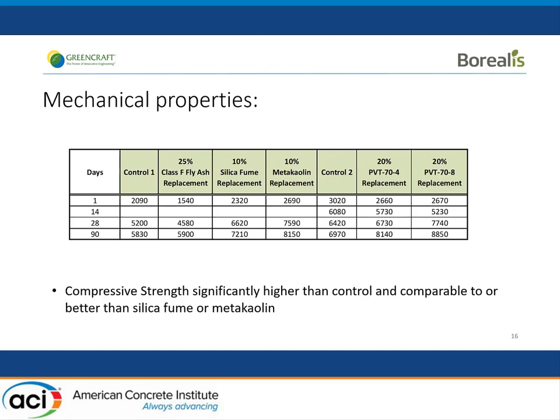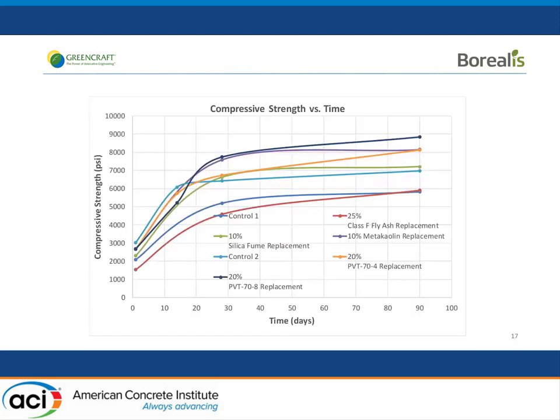For mechanical properties, comparing the first set of controls to standard materials — fly ash took 90 days to achieve equivalent strength to the control. Silica fume and metakaolin did very well. Looking at the new material (PVT) at both 4 and 8 microns, which turned out to be fairly equivalent, they're better than the control at 28 days and very close to the control at early times. They're acting more like silica fume and metakaolin in terms of strength development than fly ash.